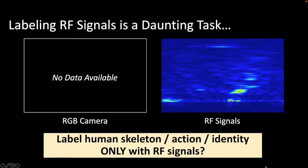In particular, it is hard to use this approach to generate labeled RF datasets of natural living at homes, since most people would have privacy concerns about deploying cameras in their homes.